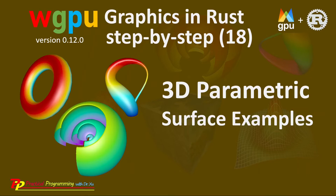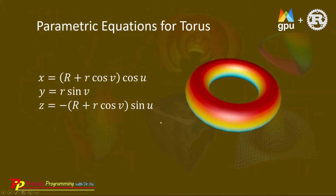In the last video, we discussed how to create parametric 3D surfaces. In this video, I will explain how to use the functions implemented in the surfaceData.rs file to create several parametric surfaces, including torus, clang-bottle, and wailing-corder surface, as shown here.